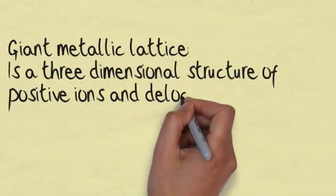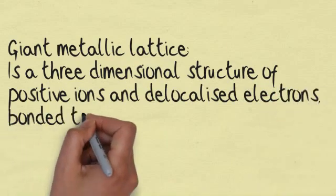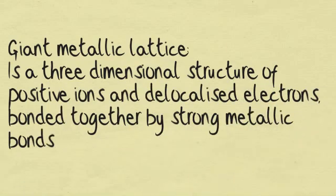A giant metallic lattice is a three-dimensional structure of positive ions and delocalised electrons bonded together by strong metallic bonds.